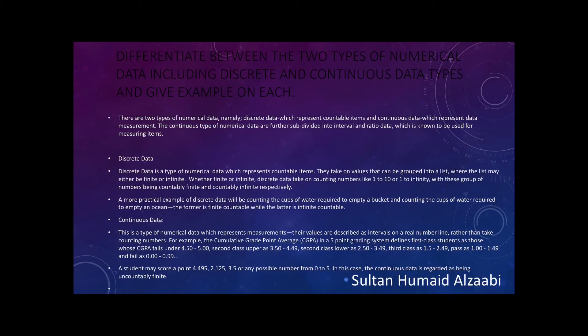Discrete data is a type of numerical data which represents countable items. They take on values that can be grouped into a list, where the list may be either finite or infinite. Discrete data takes on counting numbers like 1 to 10 or 1 to infinity. An example of discrete data is counting the cups of water required to empty a bucket — finite countable — and counting the cups of water required to empty an ocean — infinite countable.